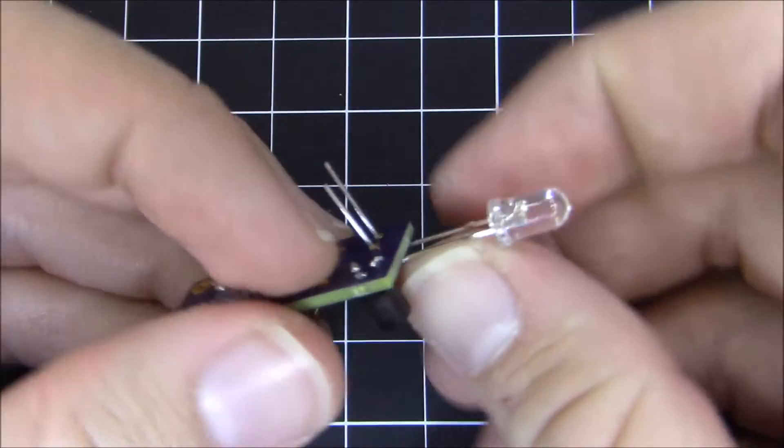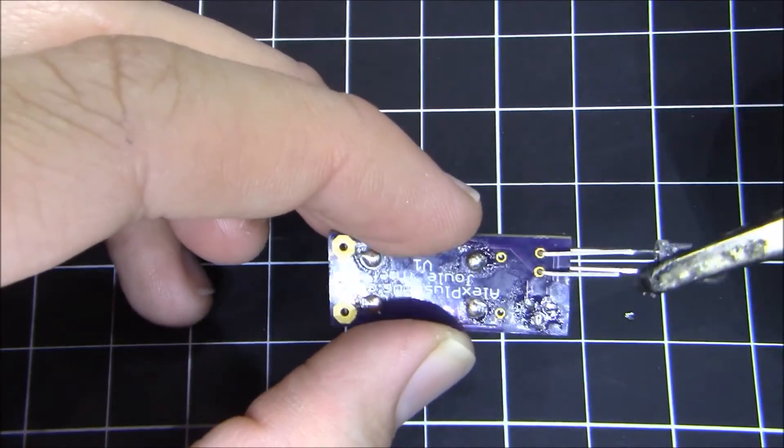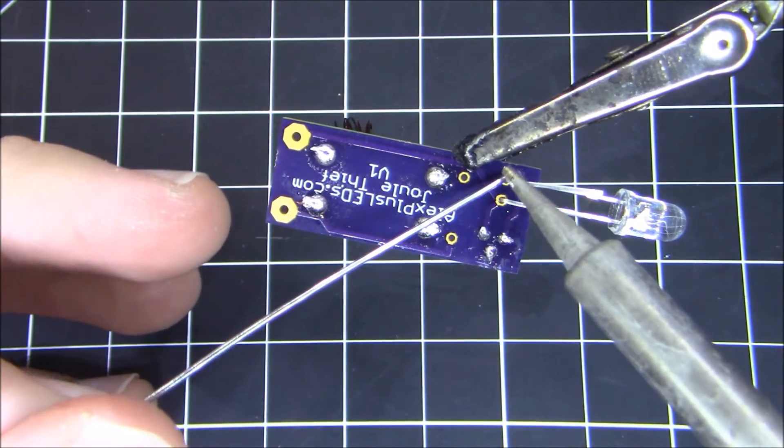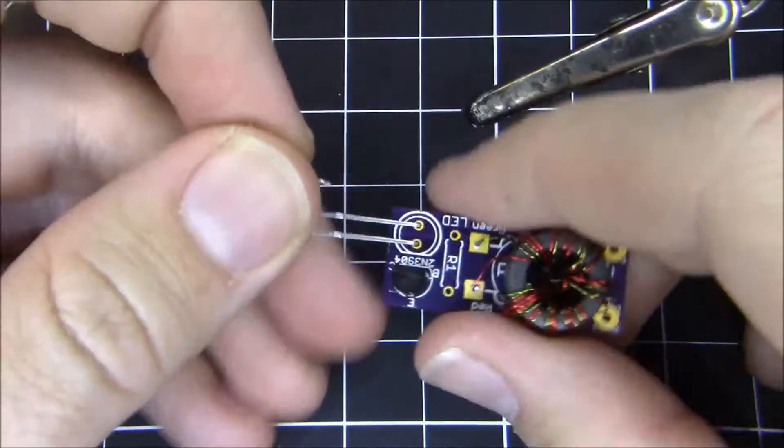And we're going to bend the leads of the LED and clamp it in our helping hands and solder it into place. And once that's soldered, we're going to trim off the excess leads.